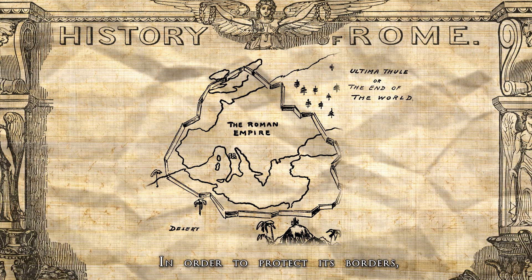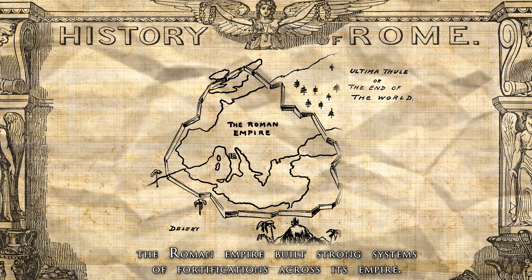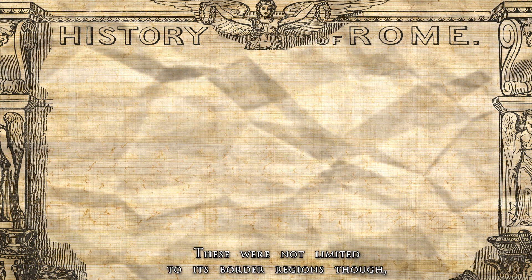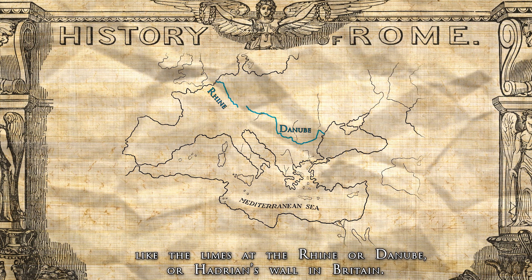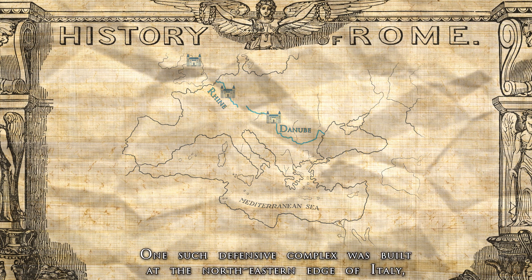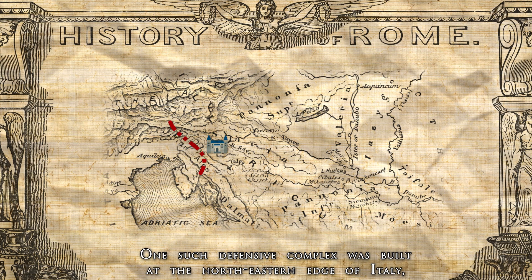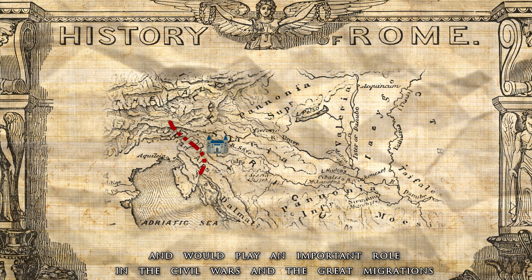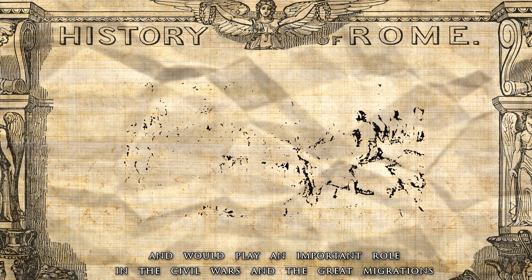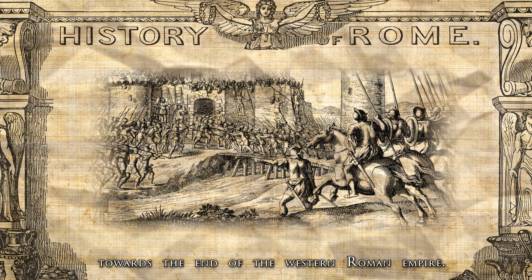In order to protect its borders, the Roman Empire built strong systems of fortifications across its empire. These were not limited to its border regions though, like the Limes at the Rhine or Danube or Hadrian's Wall in Britain. One such defensive complex was built at the northeastern edge of Italy, and it would play an important role in the civil wars and the great migrations towards the end of the Western Roman Empire.